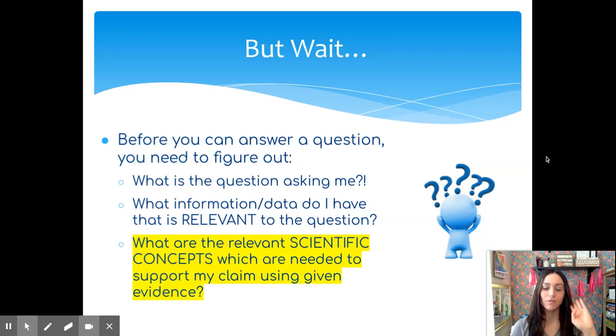Secondly, you want to think, what information or data do I have that's relevant to the question? If this is a lab, this is probably the observations or data that you collected in the experiment. Finally, we want to think about the scientific concepts, so the things that we've learned in science class, the laws, rules, and overarching concepts in science that are needed in order to show how that evidence actually supports what you're saying in your argument.